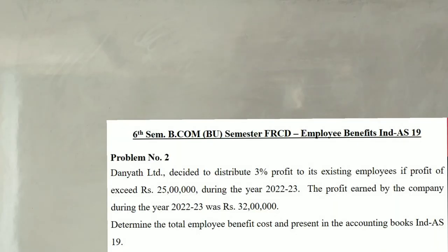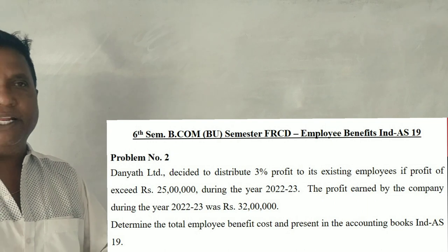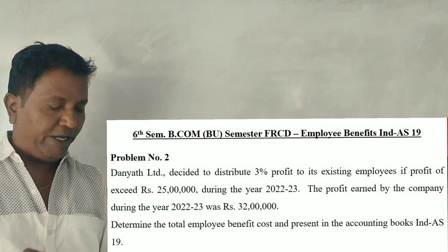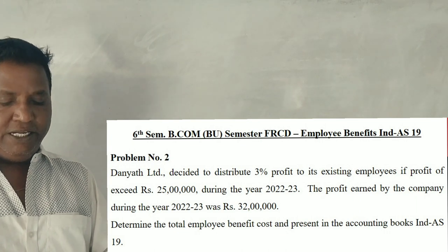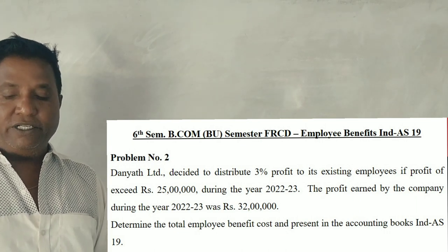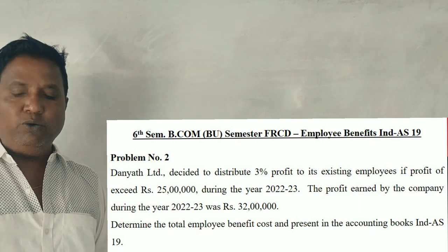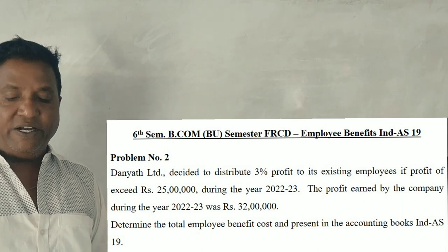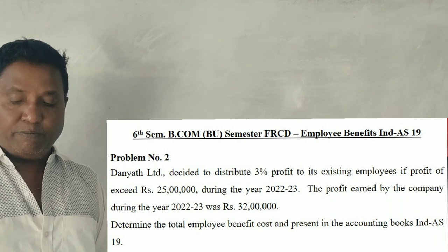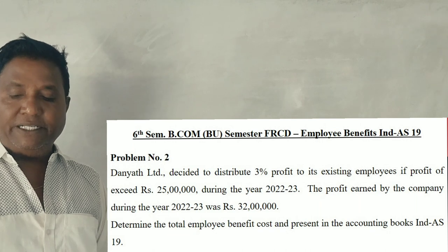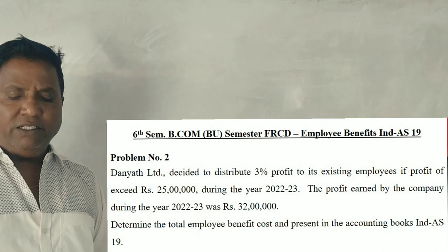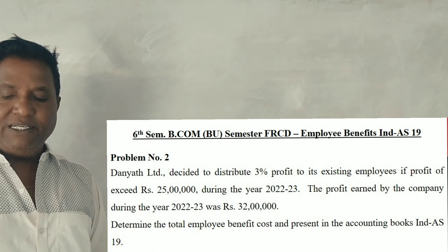Employee benefit accounting treatment as per IND AS 19. One question: Danyanth Limited decided to distribute 3% profit to its existing employees if profits exceed 25 lakhs during the year 2022-23. The profits earned by the company during the year 2022-23 were 32 lakhs. Determine the total employment benefit cost and present the accounting entries as per IND AS 19.